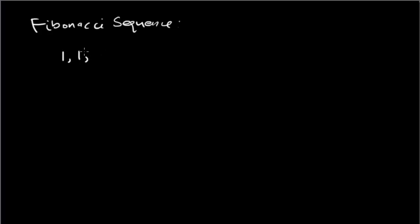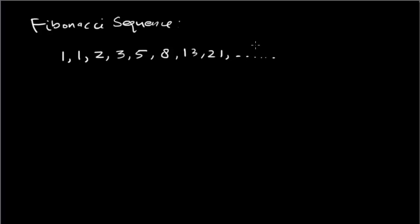So one plus one is two, the next term is two plus one equals three, then two plus three equals five, then five plus three equals eight, then eight plus five equals thirteen, then twenty-one, and so on. This kind of sequence is called a Fibonacci sequence.